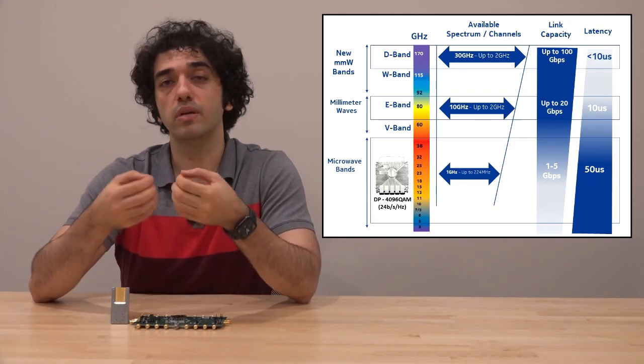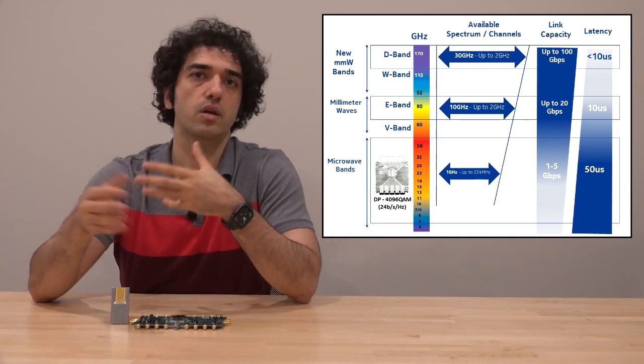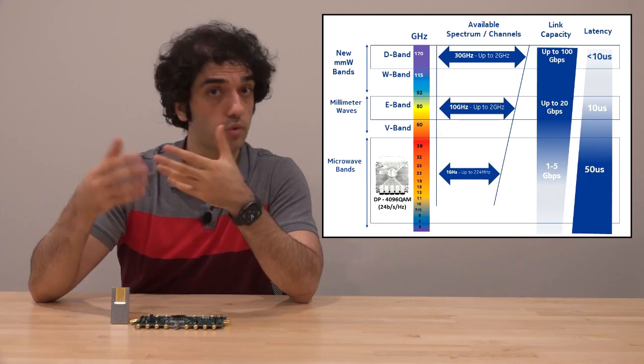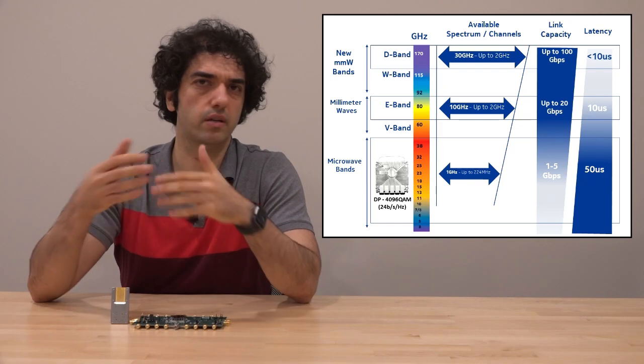What we really want to do is we want to hit a hundred gigabit per second over the air. And this can be accomplished with various different techniques. We can go to higher frequencies, which is what D-band is all about, as well as doing some other techniques in the digital domain like MIMO.